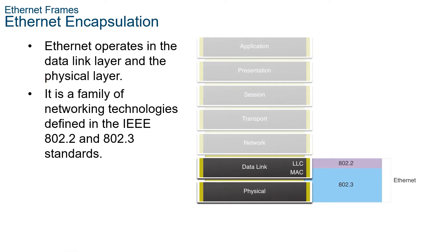Let's start with Ethernet encapsulation. This module starts with a discussion of Ethernet technology, including an explanation of the MAC sublayer and Ethernet frame fields. Ethernet is one of the two LAN technologies used today, with the other being Wireless LANs or WLANs. Ethernet uses wired communications, including twisted pair, fiber optic links, and coaxial cables. Ethernet operates in the data link layer and physical layer. It is a family of networking technologies defined in the IEEE 802.2 and 802.3 standards.